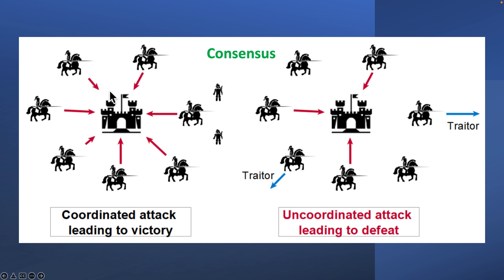Basically, these generals have no way of verifying the authenticity of a message. The problem is: how can consensus regarding the timing of the attack be reached despite the lack of trust and without a central authority? These generals need a final decision for the whole group on what to do and when to do it. That is the Byzantine Generals Problem.